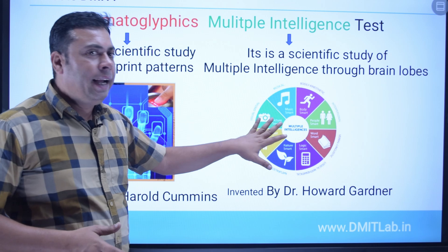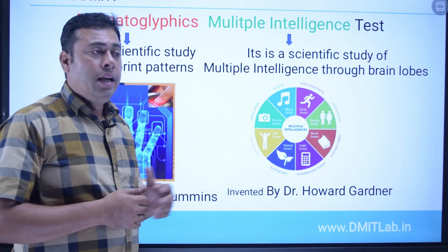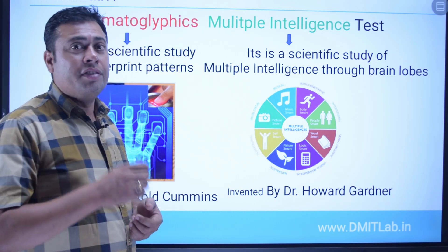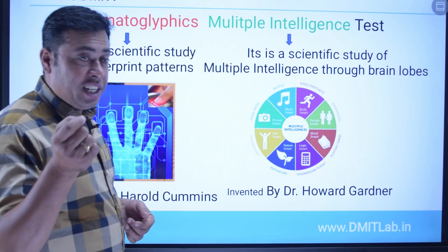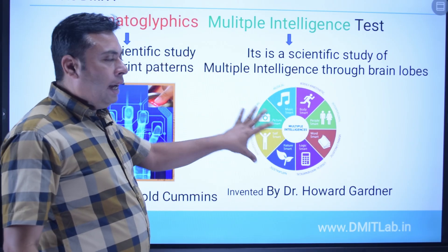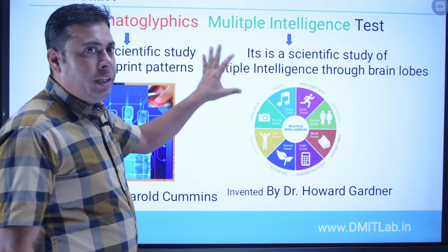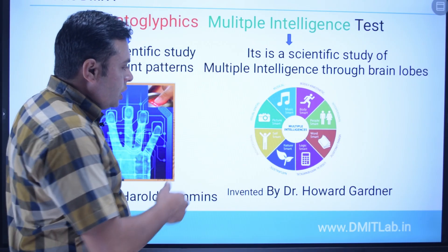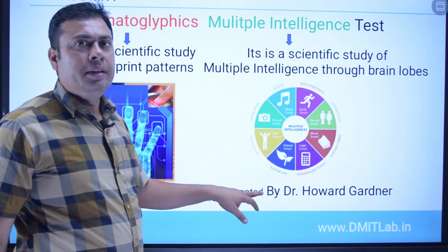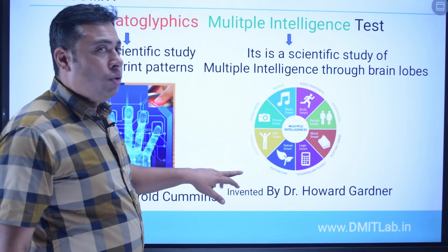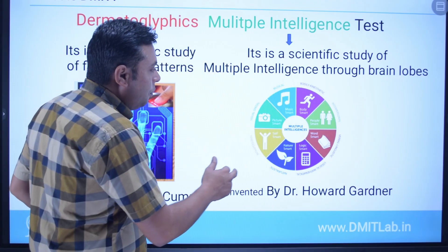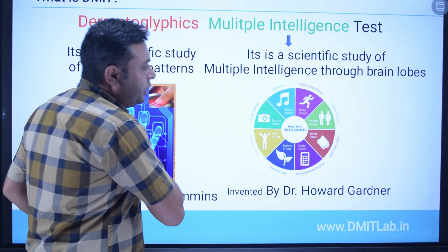There are 8 types of multiple intelligence. Recently one more has been added, called existential intelligence — also called 'feel smart.' So we understand 8 multiple intelligence through the brain lobes. Multiple intelligence was introduced by Howard Gardner, and he received a notable award for this work.